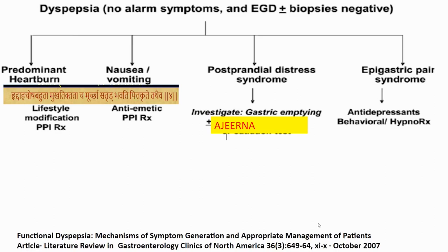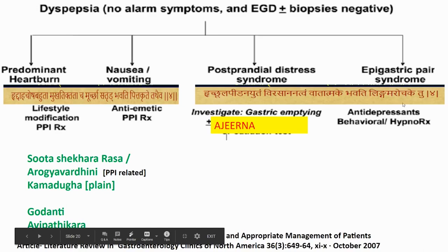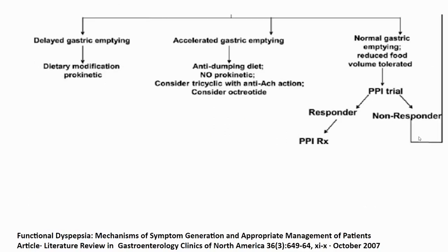The epigastric pain syndrome — that is the typical Vataja variety. In that condition my treatment would be Agnitundi, Sudha-Shekara, and Godanthi. It gives good results. For those conditions of abnormal gastric emptying — we will consider this as Ajirna, and the contemporary method of classifying this is either delayed gastric emptying or accelerated gastric emptying, with or without normal gastric emptying period.